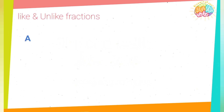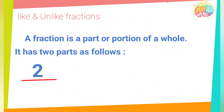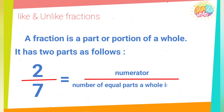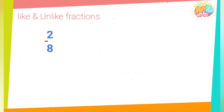A fraction is a part or portion of a whole. It has two parts, upper and lower. The upper one is the number of parts we have, use, or take, and it's called the numerator. The lower number is the number of equal parts a whole is divided into, and it's called the denominator.